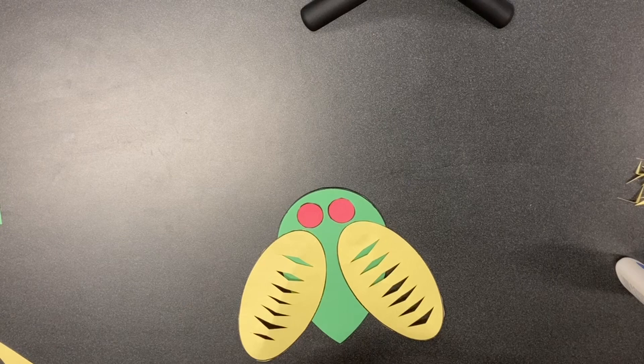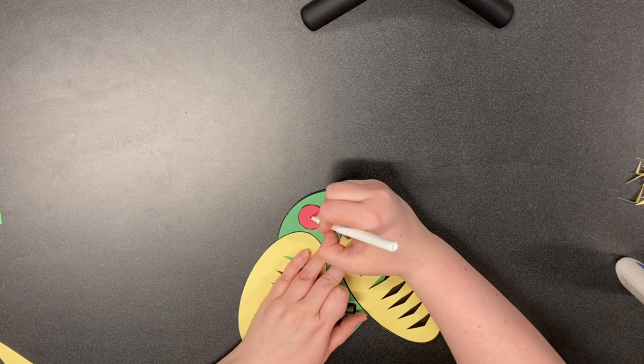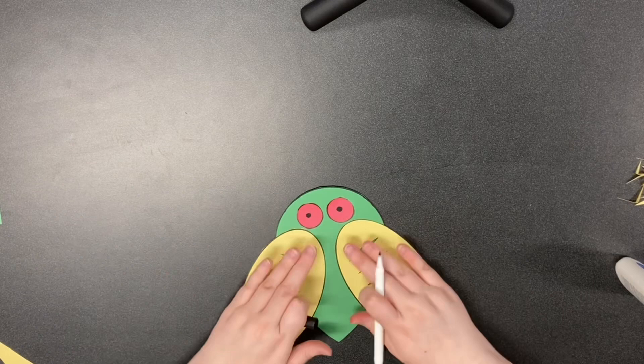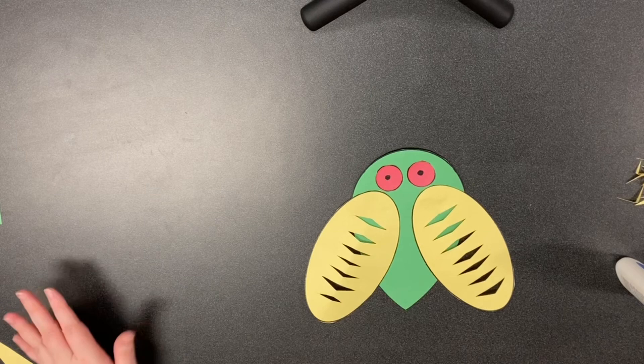And there you go! If you want to, you can add little pupils to their eyes. You might want to do it after the glue's dried, so let that dry.